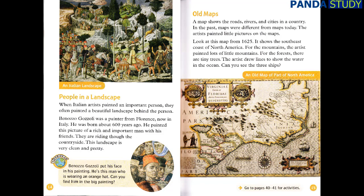People in a Landscape. When Italian artists painted an important person, they often painted a beautiful landscape behind the person. Bonazzo Gazzoli was a painter from Florence, now in Italy. He was born about 600 years ago. He painted this picture of a rich and important man with his friends. They are riding through the countryside. This landscape is very clean and pretty. Discover! Bonazzo Gazzoli put his face in his painting. He's this man who is wearing an orange hat. Can you find him in the big painting?